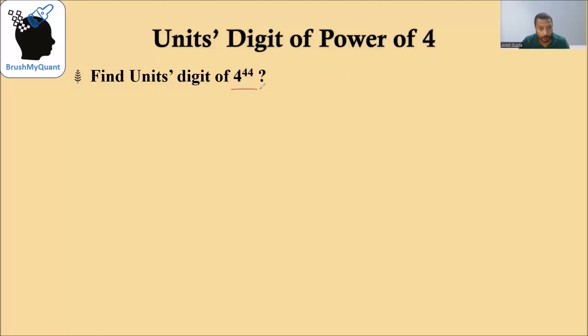Find the units digit of 4 raised to 44. Now 44 is an even number, that means the units digit will be the same as the units digit of 4 squared, which is equal to 6.